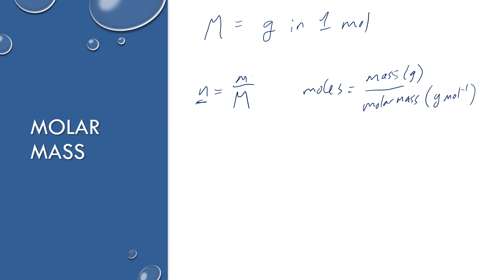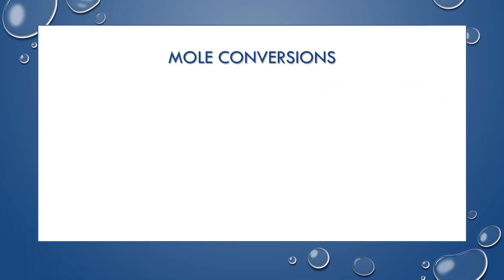Think of moles as your central unit. You can go from mass to moles using the molar mass, and you can go from moles to particles and back using Avogadro's number. If you keep that in mind, you can always figure out the mass or number of particles for anything.